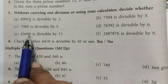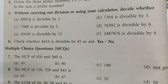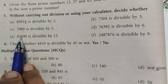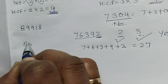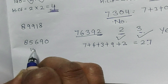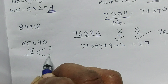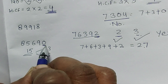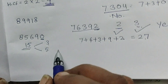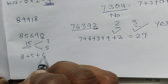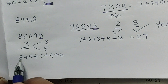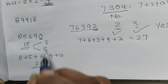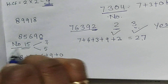Is 85,690 divisible by 15? For divisibility by 15, we use factor method: factors of 15 are 3 and 5. If the number is divisible by both 5 and 3, it will be divisible by 15. It is divisible by 5 because the unit place is 0. For 3, we add digits: 8 + 5 + 6 + 9 + 0 = 28. But 28 is not divisible by 3, so this number is not divisible by 15.